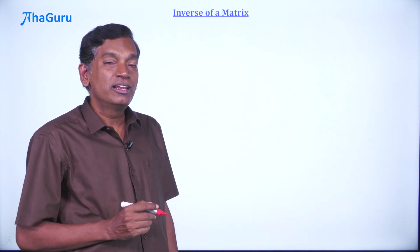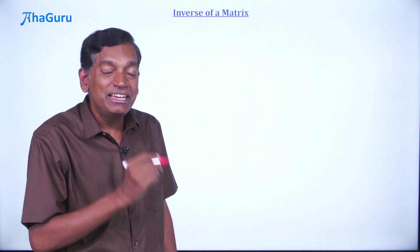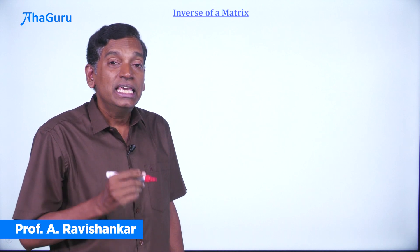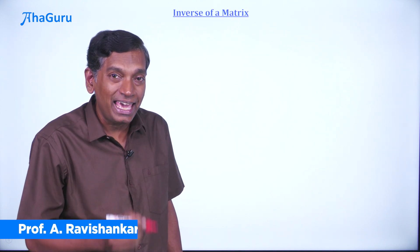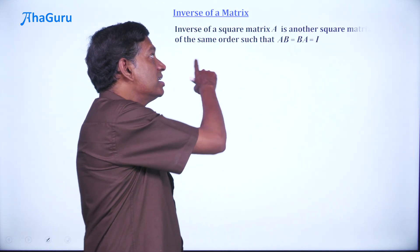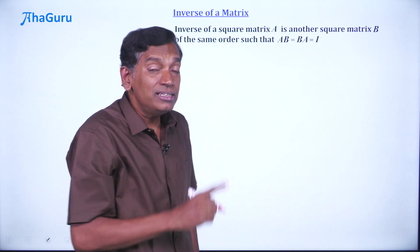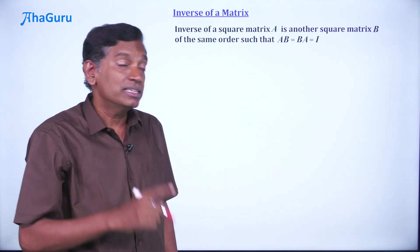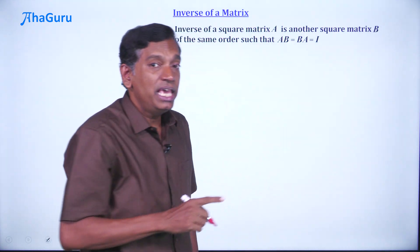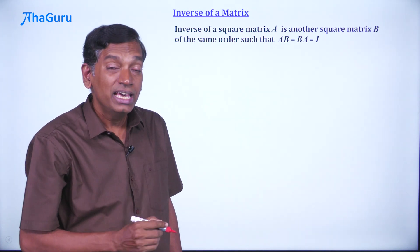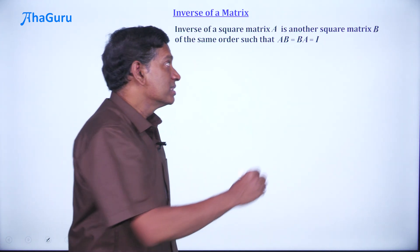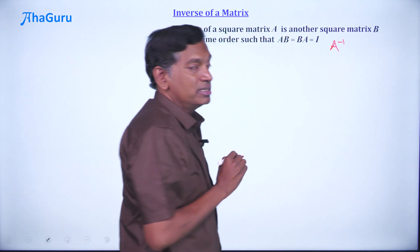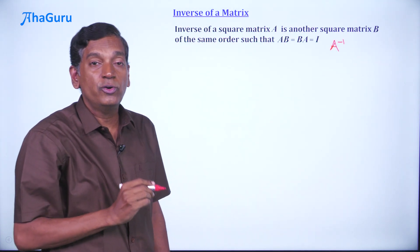In this video, we are going to learn about the inverse of a matrix. Now what is inverse? If you have a square matrix A, then inverse is another square matrix B of the same order such that AB equals BA equals I. This B we are going to denote by A inverse — that is the notation for inverse.